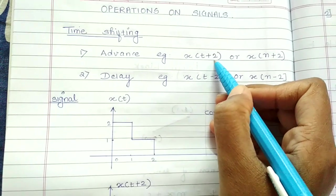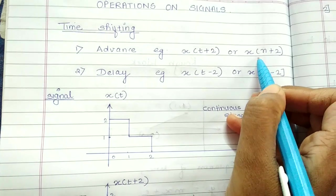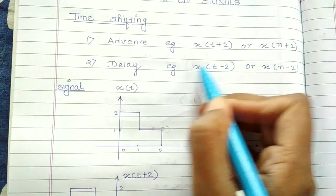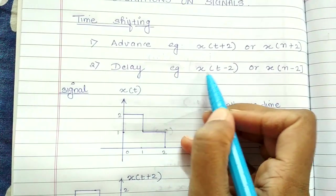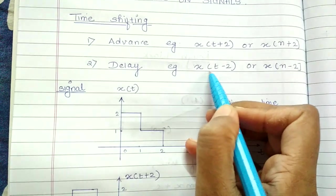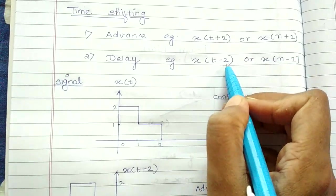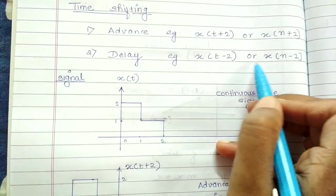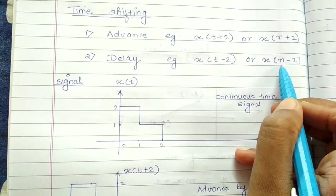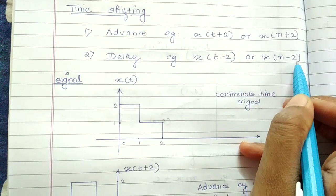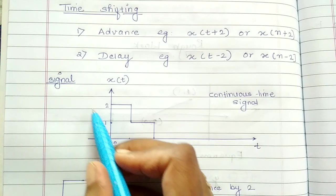So this is in the continuous time domain. Similarly, we can have the same thing in the discrete domain. Similarly, the delay signal is given as X(t − n). In this case it is 2, and in the discrete case it can be given as X[n − k].